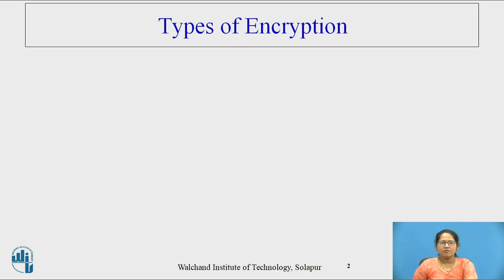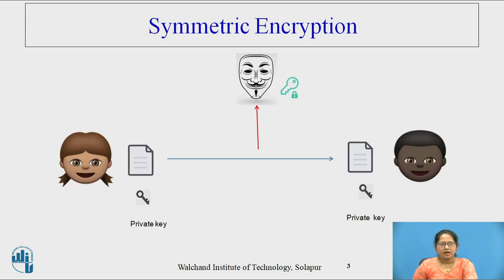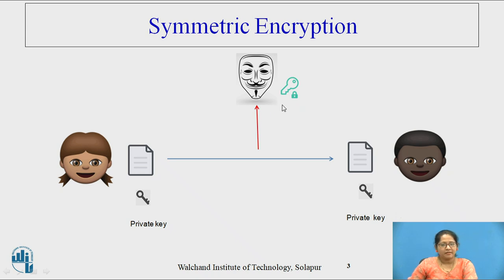Before that, we will spend a couple of minutes on different types of encryption. There are two types of encryption: symmetric and asymmetric. In symmetric encryption, a private key is shared by both users. If Alice wants to send a document to Bob, she will use the private key to encrypt that document. At Bob's side, Bob will decrypt the document using the same private key. If an intruder is able to get that private key, they will get the document — that is the problem, as the private key may be hacked.